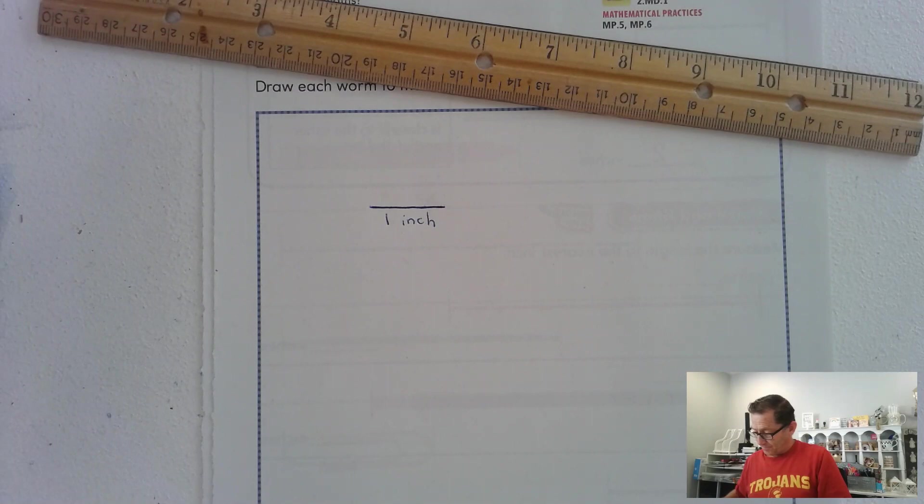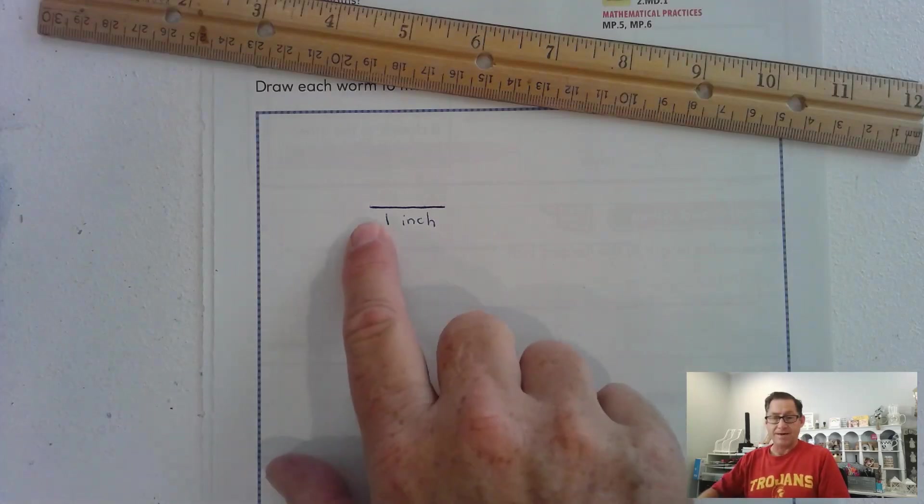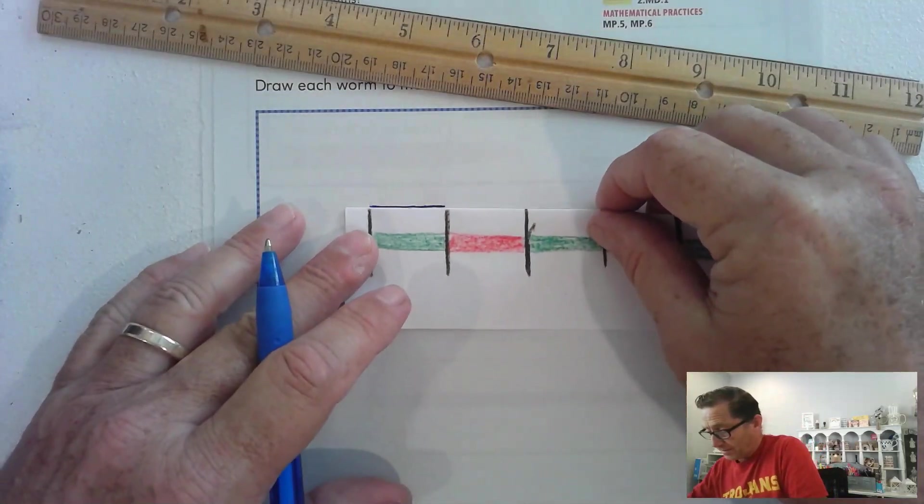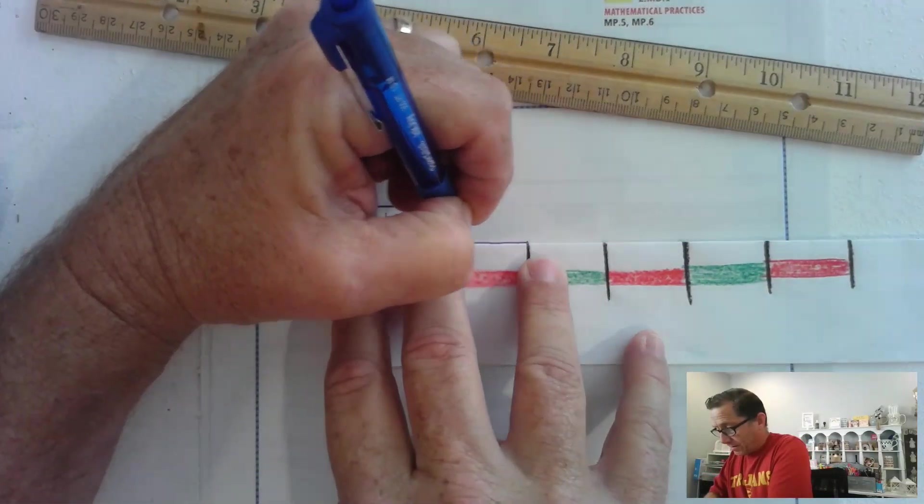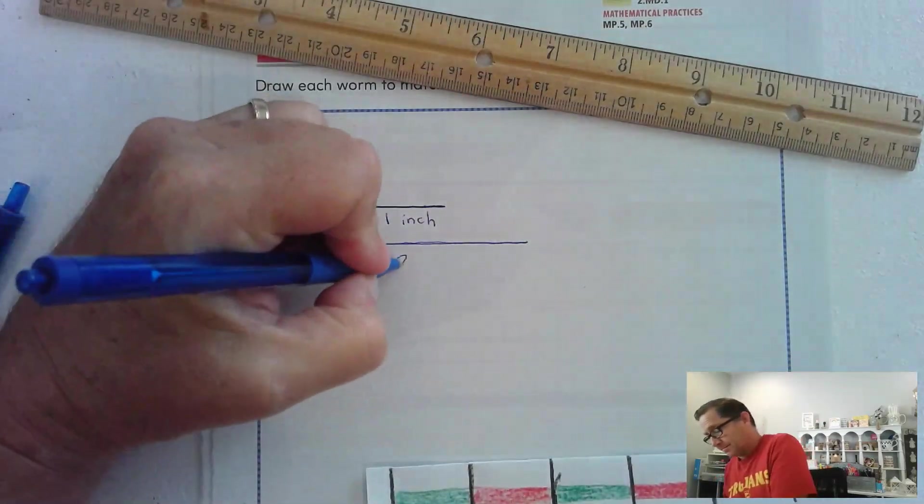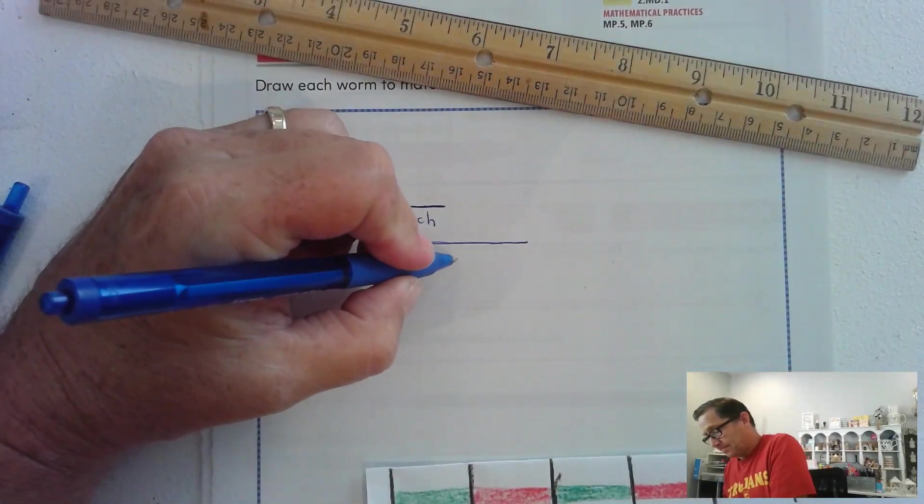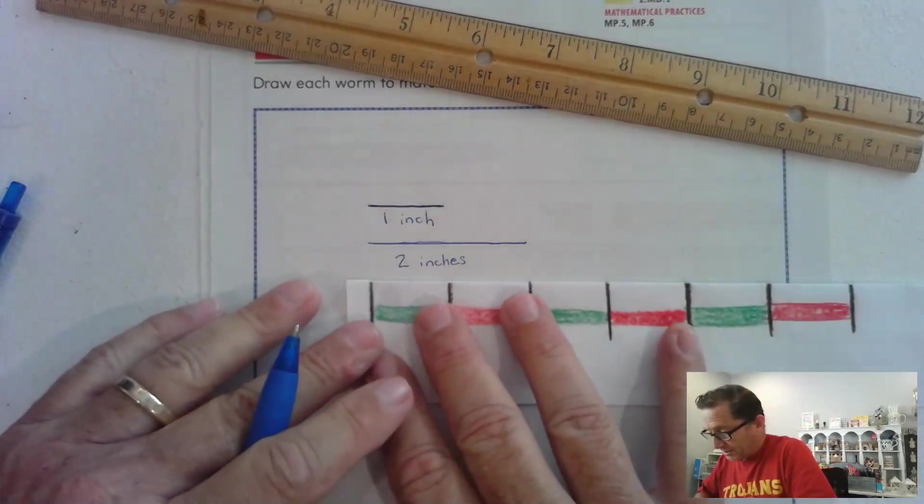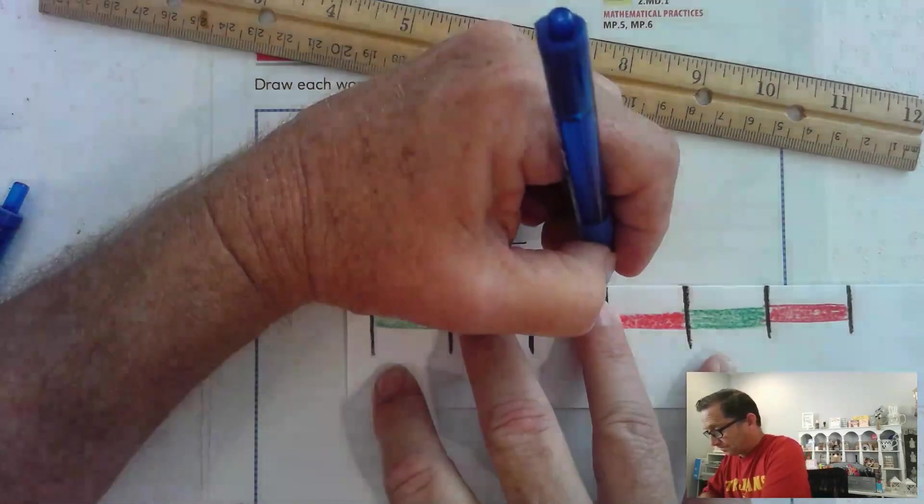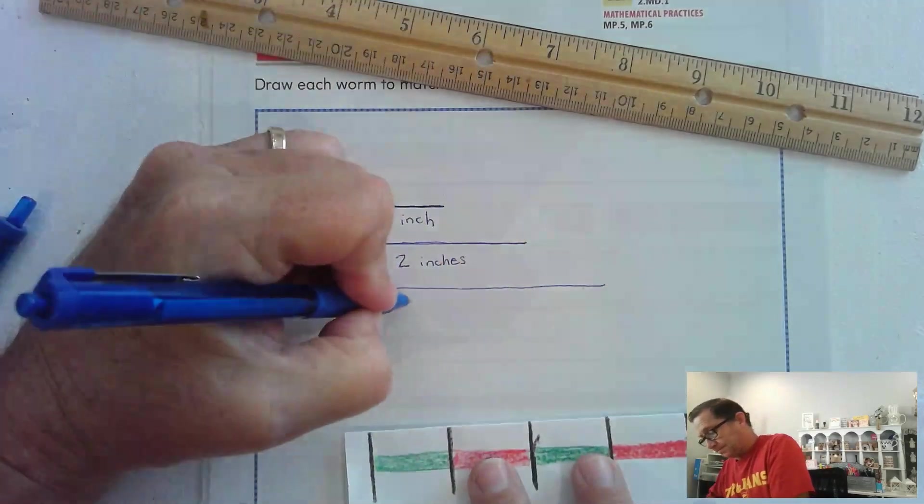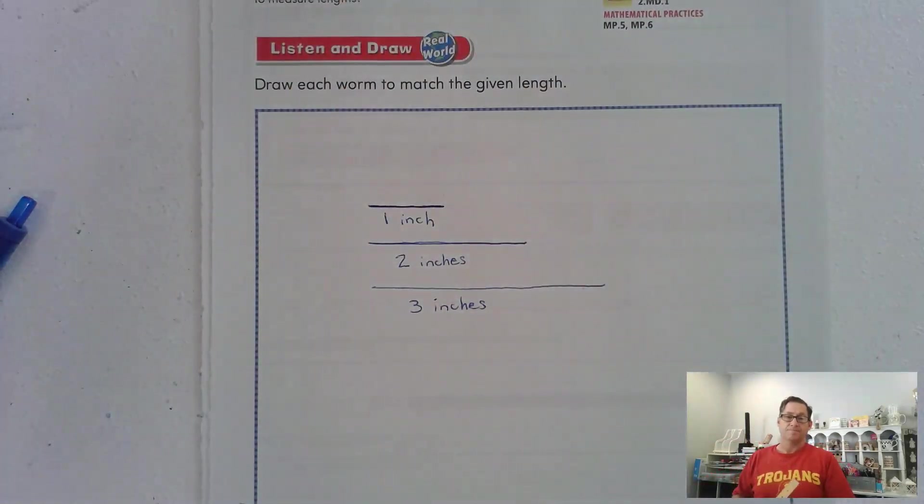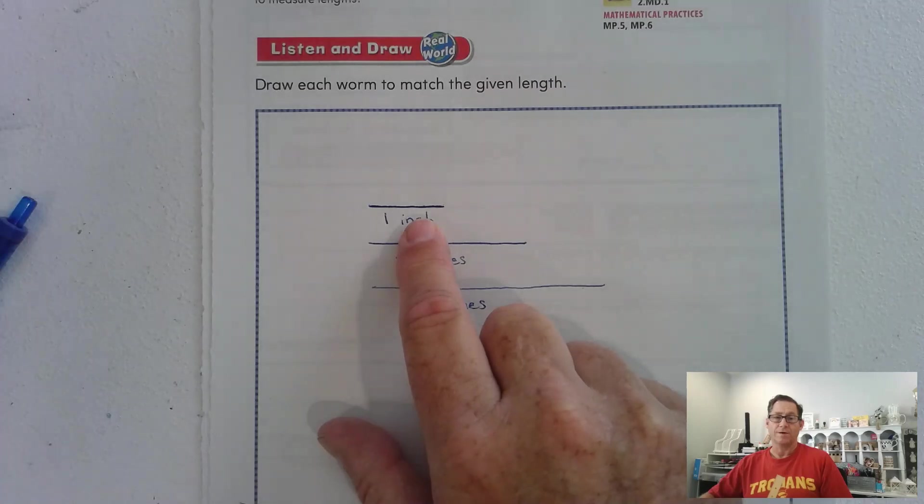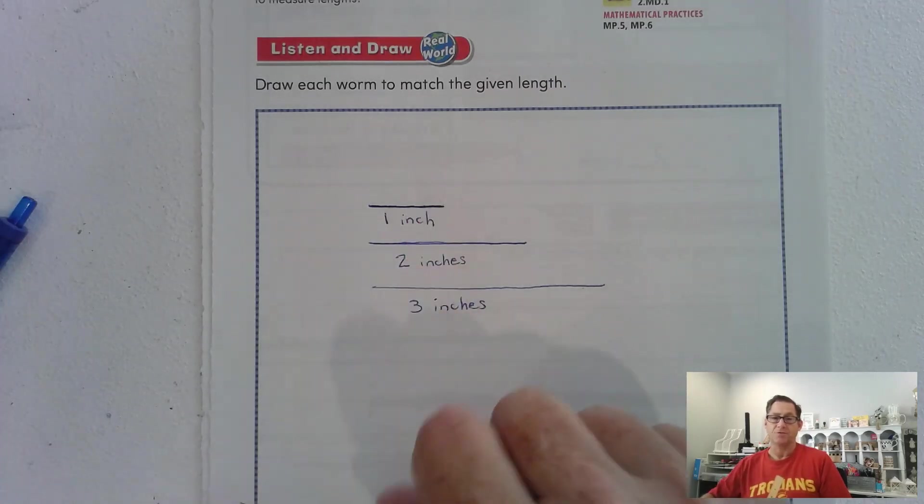Now draw a worm that is two inches long and after that draw one that is three inches. Now line up the two inch worm so that it's right underneath the one inch worm. So move it down, and we're going to draw it out to two inches, and then three inches. So the two inch worm is twice as long as the one inch worm, and the three inch worm is three times as long as the one inch worm.